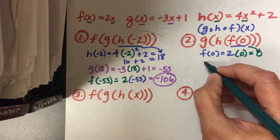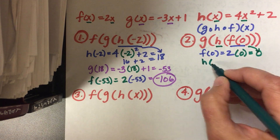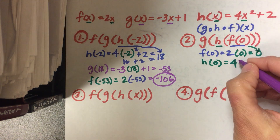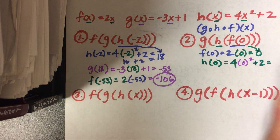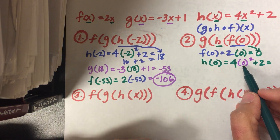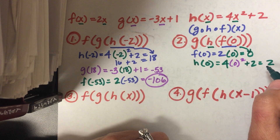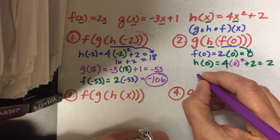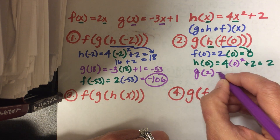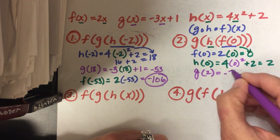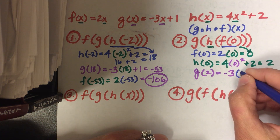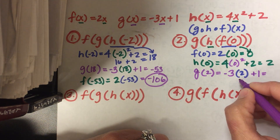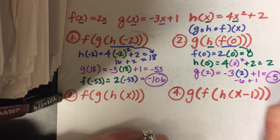Now I'm going to take that input and plug it into my next function, inside out, which is h. h of 0: h of x is 4x squared plus 2, so 4 times 0 squared plus 2. That gives me 0 plus 2, which is 2. Now I plug that into g. g of 2: g is negative 3x plus 1, so negative 3 times 2 plus 1. Negative 6 plus 1 is negative 5. That is your final answer.